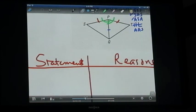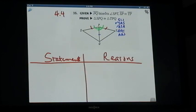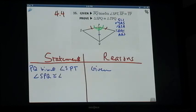So we're going to start out with our statements. We have the given PQ bisects angle SPT. That's given. Now, from that, we know that angle SPQ is congruent to angle QPT. That's not given. That is the definition of bisection.